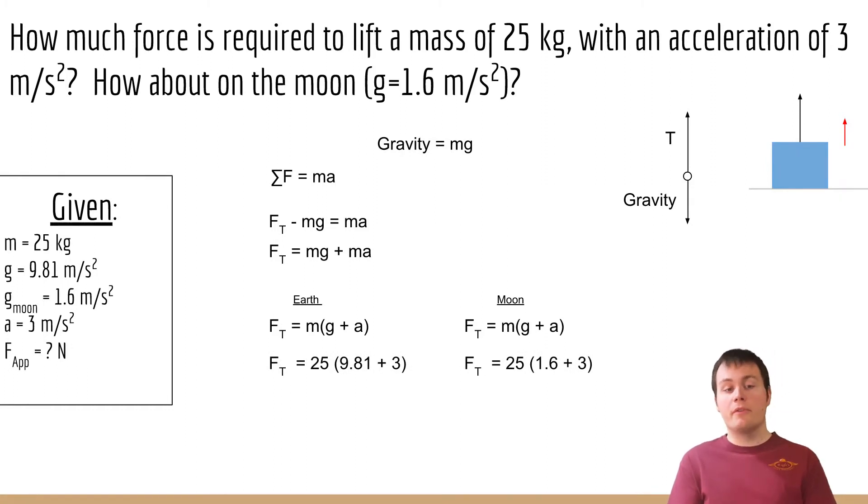And when we do that, we find that the force required on Earth is 320.25 newtons and on the Moon it's only 115 newtons. This makes sense because gravity here on Earth is stronger than it is on the Moon.